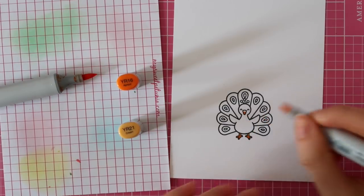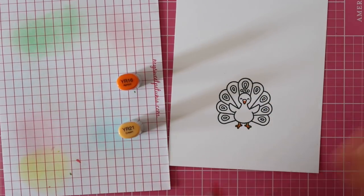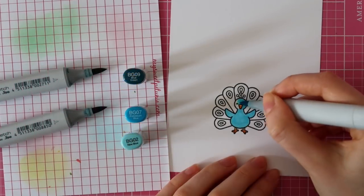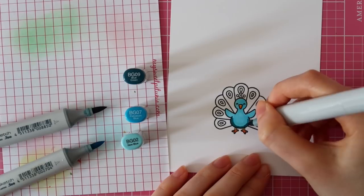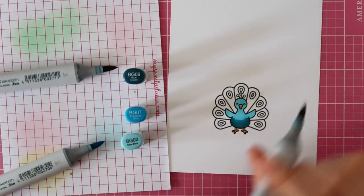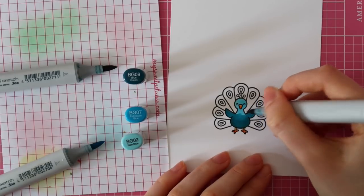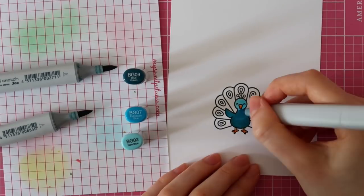To color the peacock's feet and beak, I am using YR16 and YR21, and then I'm going to color this peacock's body using the same colors. So I'm using BG09, BG07, and BG02.